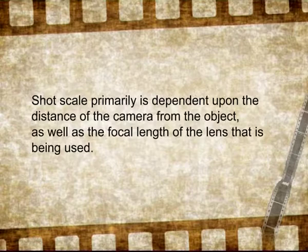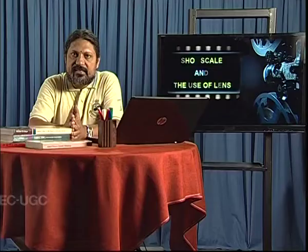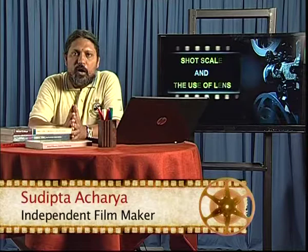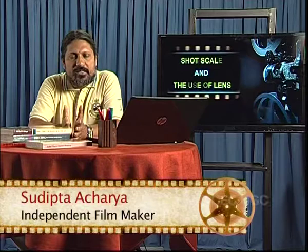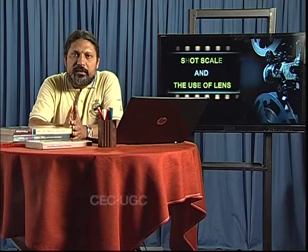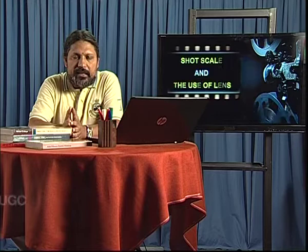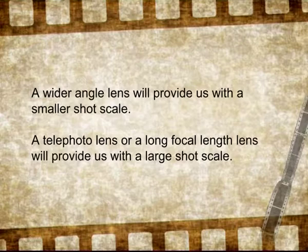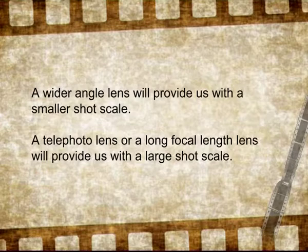By doing a permutation of the focal length of the lens and the distance of the camera, a director can arrive at a vast number of possibilities in shot scale. A shot scale usually refers to the size of the human figure in the frame. In a nutshell, a wider angle lens will provide a smaller shot scale and conversely a telephoto or long focal length lens will provide a large shot scale.